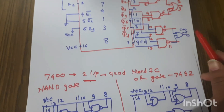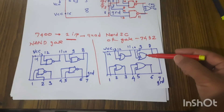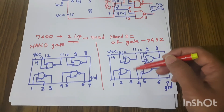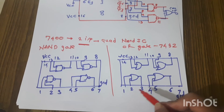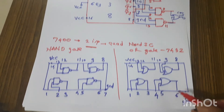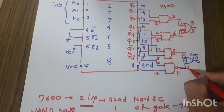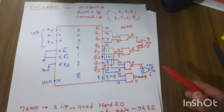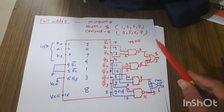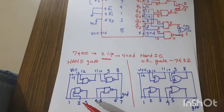For the OR gate, we use IC 7432, the two-input quad OR gate IC. Pins 1 and 2 are inputs, pin 3 is output. Pins 4 and 5 are inputs, pin 6 is output. This is how we assign the pin numbers from the standard pin configurations of the NAND gate and OR gate ICs.